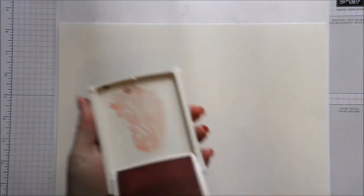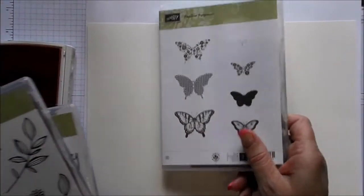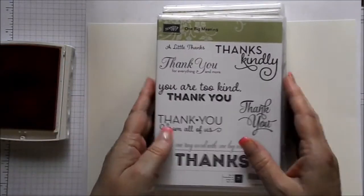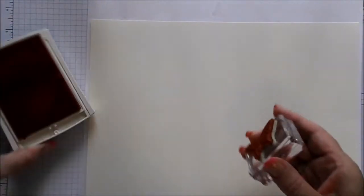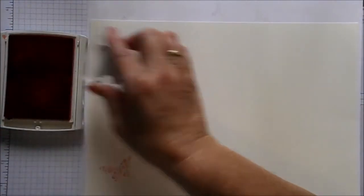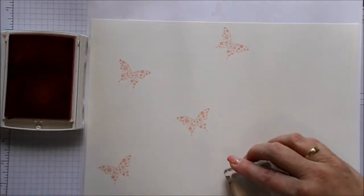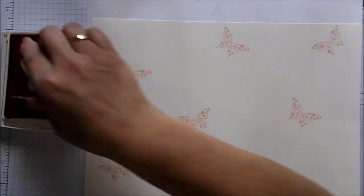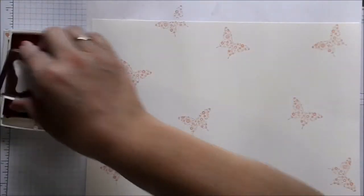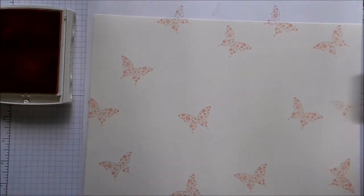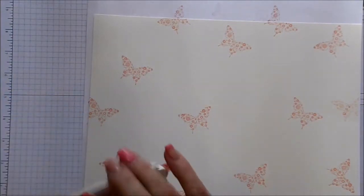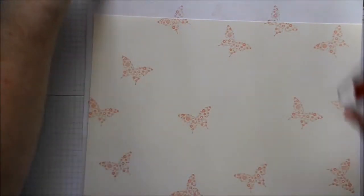And the stamp sets I'm using are Papillon Potpourri, Falling Flowers and One Big Meaning. Now what I did was got a piece of very vanilla cardstock to start off with, mounted my butterfly, the large one, on a block and just stamped randomly all over, turning the butterfly around as I go. I'm even stamping off the paper so that it looks more like proper continuous designer paper.